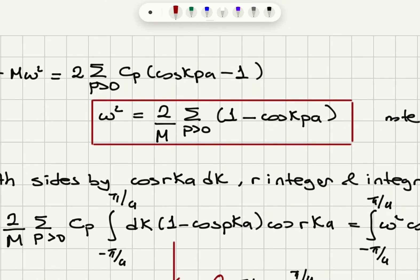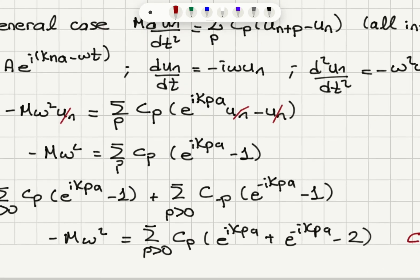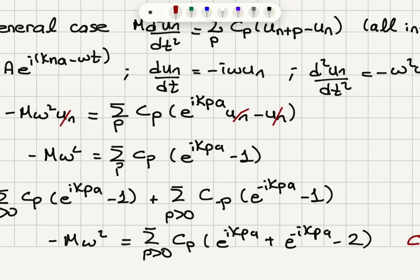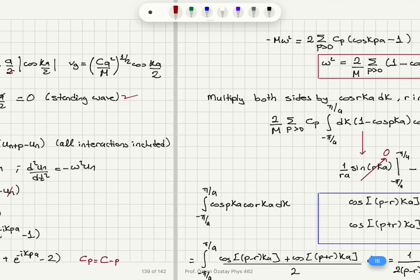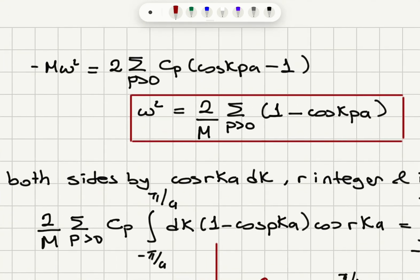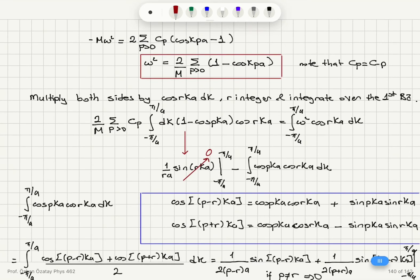Going back to Euler's formula, e^(ikpa) = cos(kpa) + i·sin(kpa) and e^(−ikpa) = cos(kpa) − i·sin(kpa). The sin(kpa) terms cancel, and we obtain 2·cos(kpa). We will find ω² = (2/m) Σₚ₊ cₚ(1 − cos(kpa)). This is our dispersion relation. We note that cₚ = c₋ₚ.